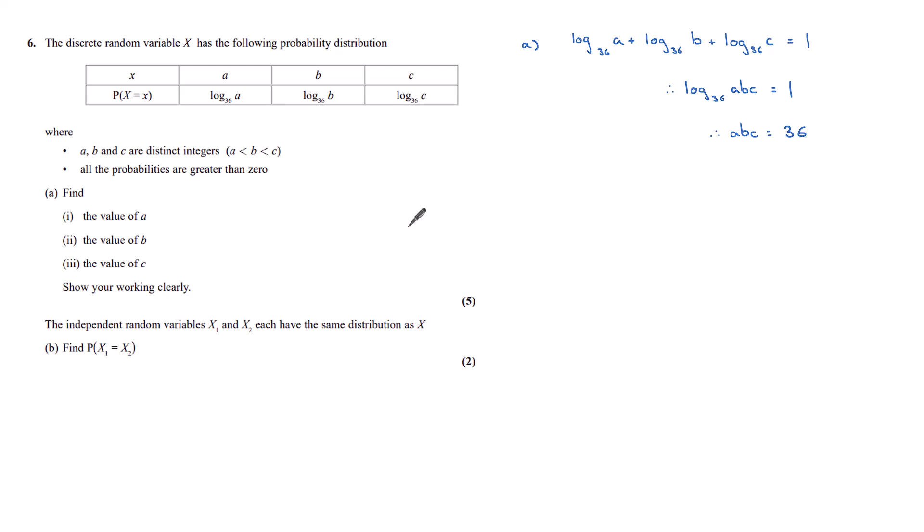And so now we've got a little bit of a trial and error thing in front of us. We know that since each of these probabilities are greater than 0, a, b, and c can't be 1. They must be greater than 1 because log 1 is 0. So we know them to be greater than 1, which means we need to test the other factors of 36.